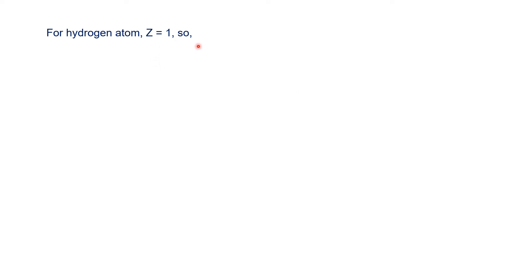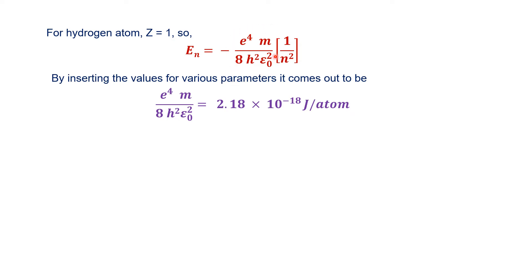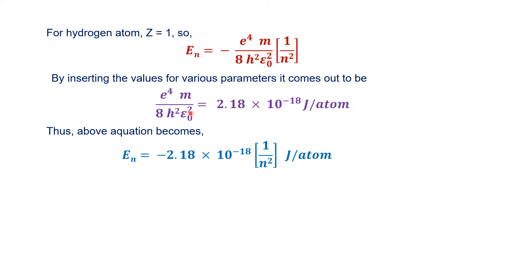For hydrogen atom, z equals 1, so z² equals 1. We put 1/n² in the formula, and the other terms remain the same. All the constant numerical values — e⁴m divided by 8h²ε₀² — when calculated give 2.18 × 10⁻¹⁸ joule per atom. Putting this value into the formula, En equals minus 2.18 × 10⁻¹⁸ multiplied by 1/n² joule per atom.